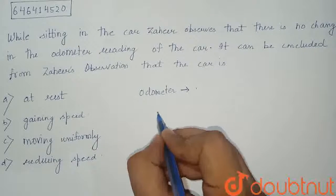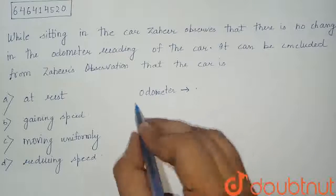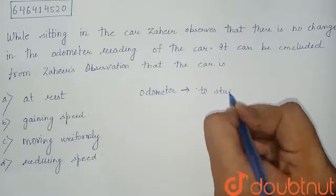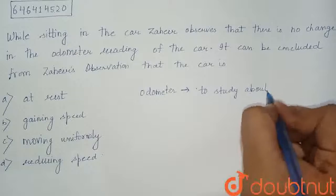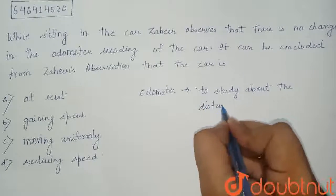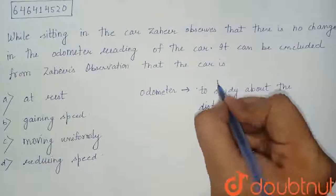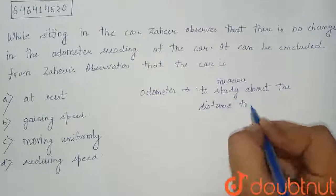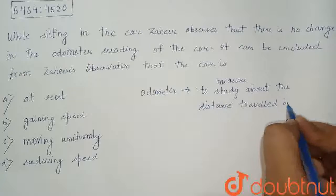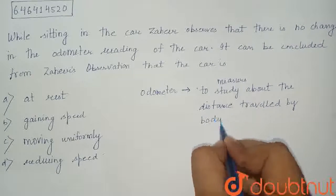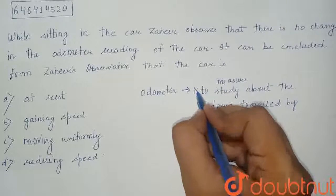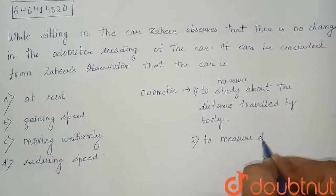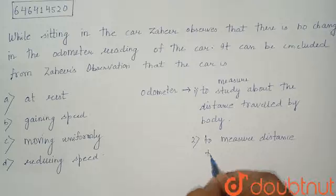Let's suppose that if the odometer reads 5 meters, it is used to measure the distance traveled by the body.